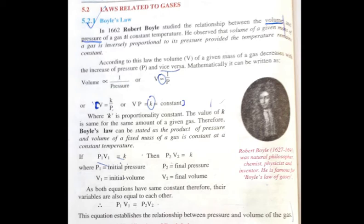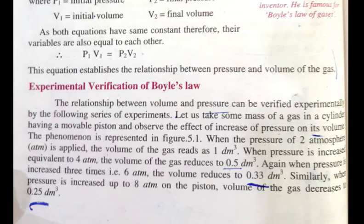Now let's see experimental verification. Experimental verification means if you have any gas, you have to take a volume. We want to see that this relationship is correct or not. If we increase the pressure, then the volume will decrease. If we decrease the pressure, then the volume will increase. If it is constant or not, then we have to do experimental verification.